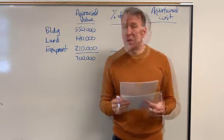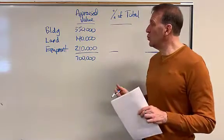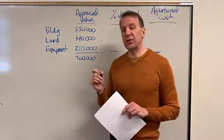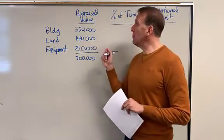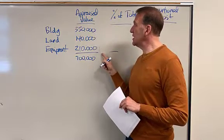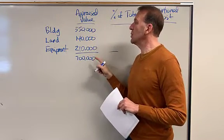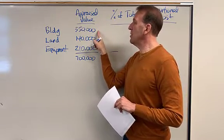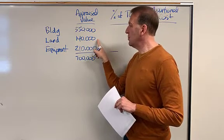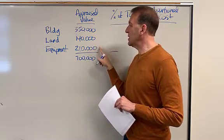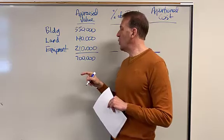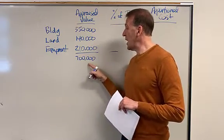So how do we do that? We're going to look at the relative market value for each of these. For the relative market value, I'm going to be using the appraised value. So we've got the appraised value for the building, $350,000. The appraised value for the land, $140,000. The appraised value for the equipment, $210,000.